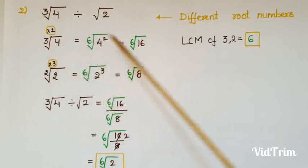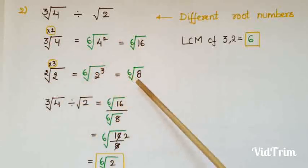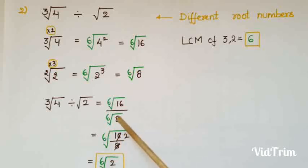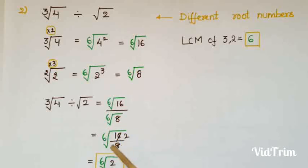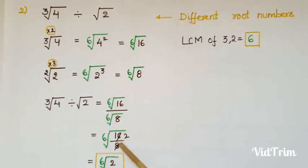Similarly, √2 = ⁶√(2³) = ⁶√8. Now the roots are the same, so ∛4 ÷ √2 = ⁶√16 / ⁶√8. Using the rule ⁶√a / ⁶√b = ⁶√(a/b), this equals ⁶√(16/8) = ⁶√2.